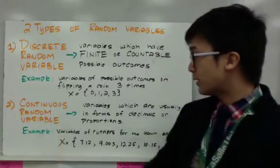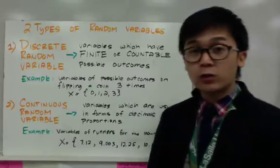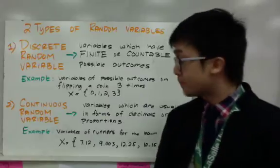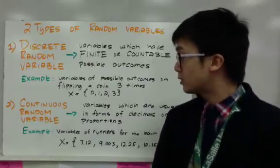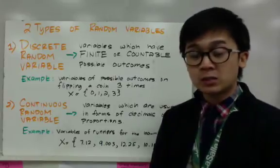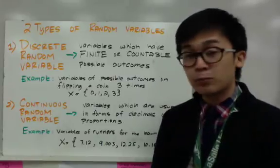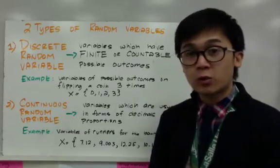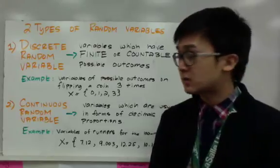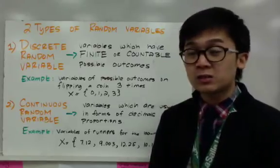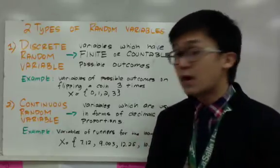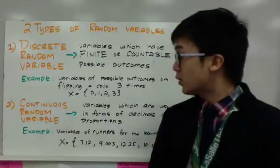So let's say this example right here, we have to list down the variables of runners for the 100-meter sprint. Now, when we're talking about this particular experiment, our random variable x will represent decimals because when you time a sprinter running 100-meter dash, you're not going to record it as 7 seconds or 3 seconds or 10 seconds, because if you don't include the decimals, most of them will have multiple ties because we're discounting the decimals.